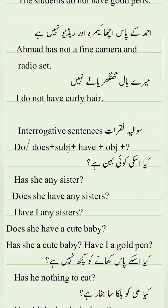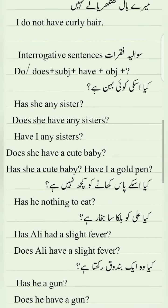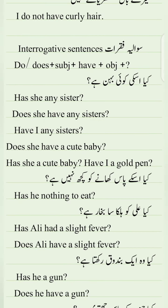Kya us ki koi behen hai? — 'Does she have any sisters?' Ya jo pehla wala — 'Have she any sisters?' Similarly: 'Have I any sisters?' — 'Does she have a cute baby?' or 'Has she a cute baby?' — 'Have I a gold band?'